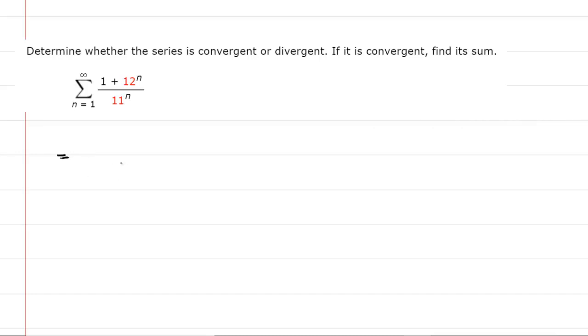Now the first thing that we'll do, and for the sigma notation we'll omit the n equals one and infinity now just for simplicity, is we're going to take this expression and split it apart. We're basically going to take advantage of a common fraction property. When you have the following arrangement, you can split the numerator so it's a over c plus b over c. This is just a little arithmetic operation. So we're going to split this up into one over 11 to the power of n plus 12 to the power of n over 11 to the power of n.